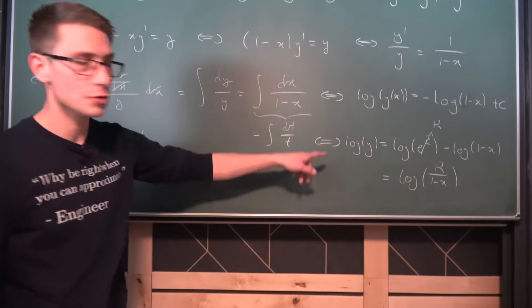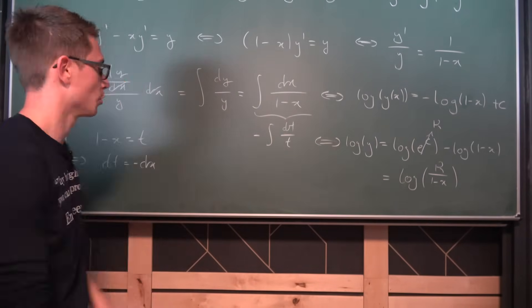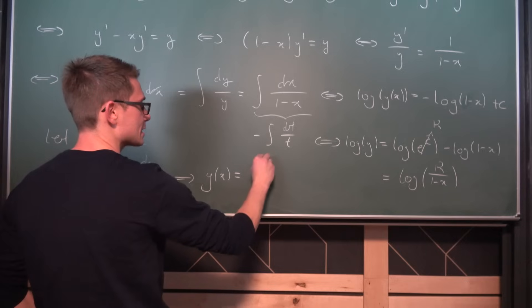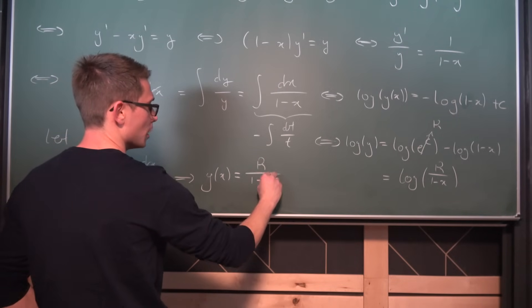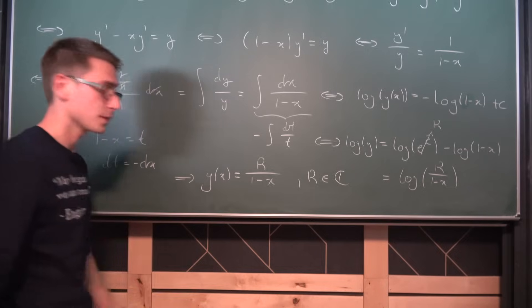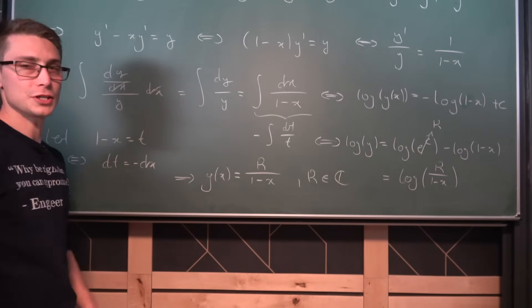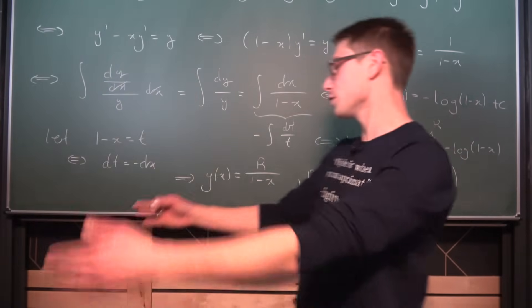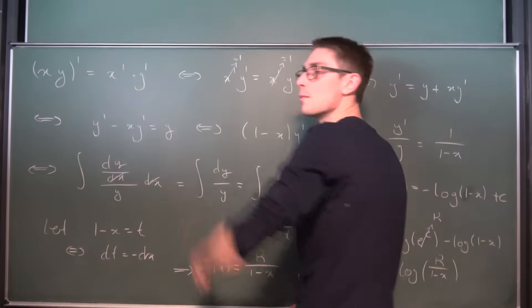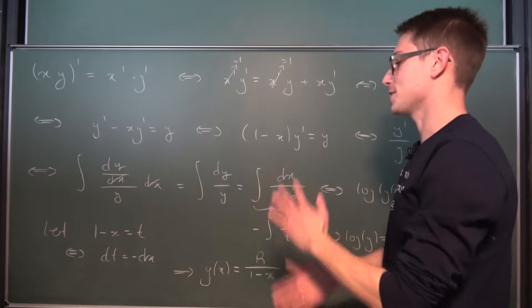Meaning if we were to now use the exponential function on both sides, we are going to get as a solution that y with respect to x is hence kappa divided by 1 minus x, where kappa is an element of the complex numbers. And that right here is the solution to the whole differential equation. And feel free to differentiate it and plug it into here and see if it gives you the freshman's dream of product rule for differentiation.